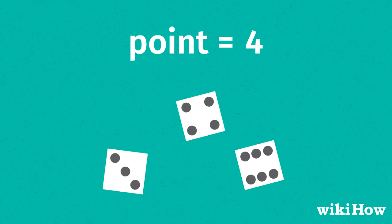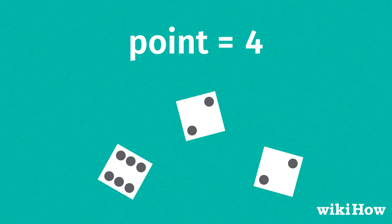If any other combination of dice is rolled, the banker continues to roll until they set their point, or automatically win or lose.